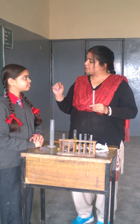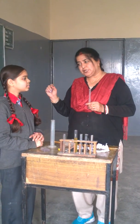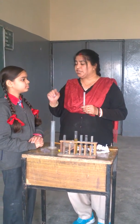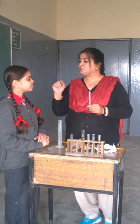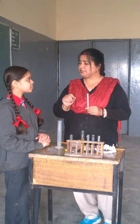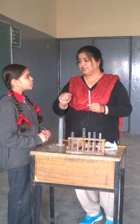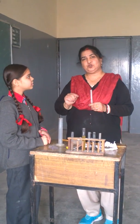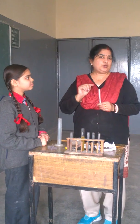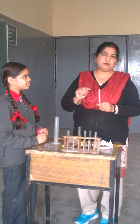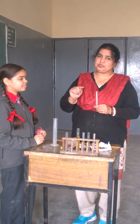Now you understand what is soluble in water? Can you tell me one example of a soluble substance other than salt? Sugar. So sugar is another soluble substance.